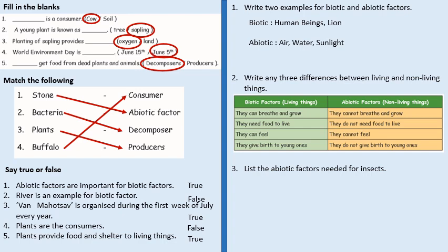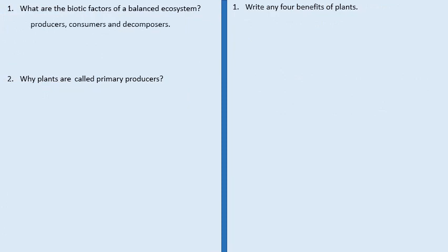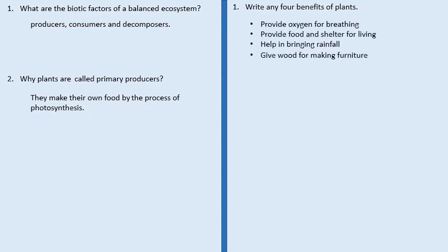Write two examples for biotic and abiotic factors. What are the three differences between living and non-living things? Living things: they can breathe and grow; they need food to live; they can feel. Abiotic factors: they cannot breathe and grow; they do not need food to live; they cannot feel. List the abiotic factors needed for insects: plants, small creatures, soil, air. What are the biotic factors of a balanced ecosystem? Producers, consumers and decomposers. Why are plants called primary producers? They make their own food by the process of photosynthesis. Write any four benefits of plants: provide oxygen for breathing; provide food and shelter for living things; help in bringing rainfall; give wood for making furniture.